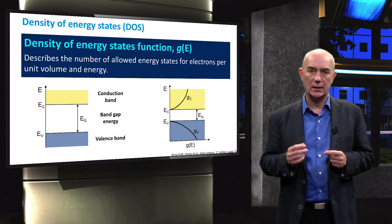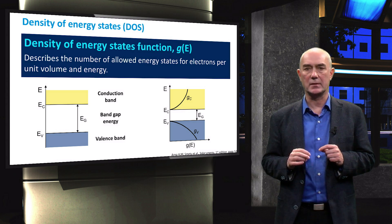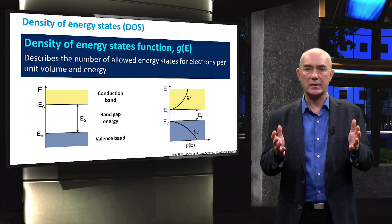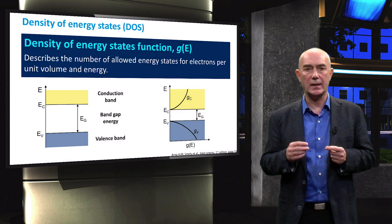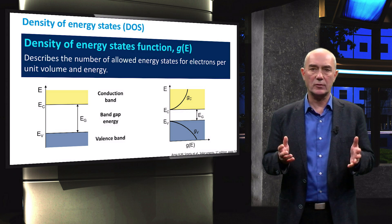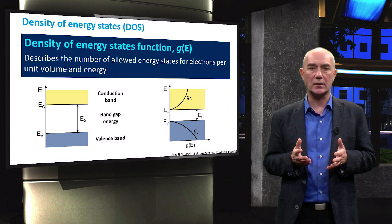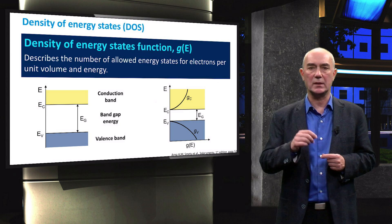gv, on the other hand, represents the density of states of holes in the valence band. Holes essentially occupy the states in the valence band of missing electrons, the electrons that have been excited to the conduction band. You will learn much more about holes in future videos.